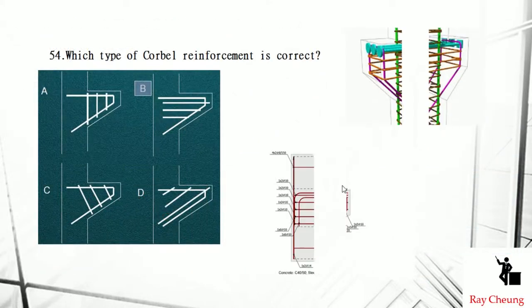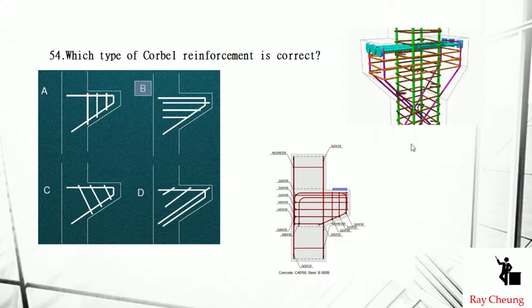This is talking about the corbel. A corbel is something like the column extended forward to support the elements. The length goes further, and this is something like the column reinforcement — then you will choose reinforcement type B.